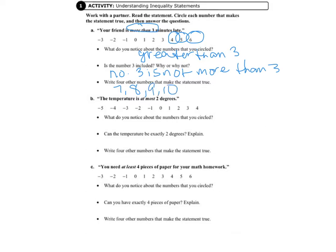Letter B, the temperature is at most two degrees. At most two degrees. So it says, what do you notice about the numbers that are circled? Well, we haven't circled them yet, so let's go ahead and do that.